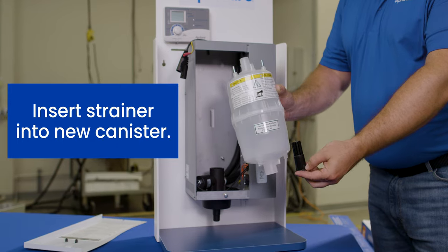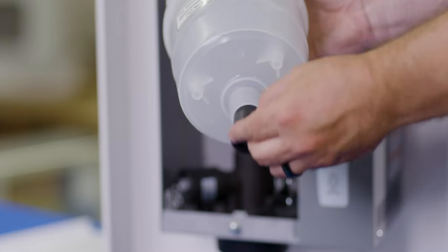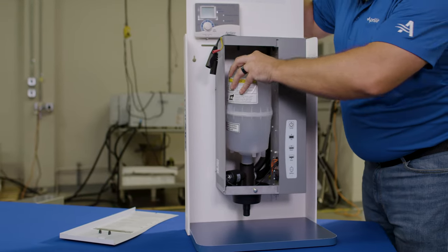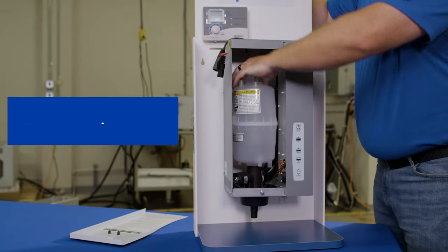Now make sure that the strainer is inserted at the bottom of the new canister and place the canister in the receptacle where you just placed that o-ring. Make sure that the label is facing out.